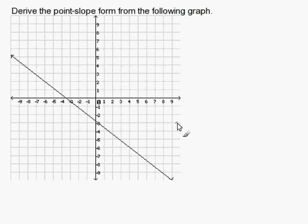Derive the point slope form from the following graph. In this problem, before we start, we have to know the point slope equation, and that is y minus y₁ equals m times the quantity x minus x₁. m is the slope and x₁, y₁ are a point on the line.